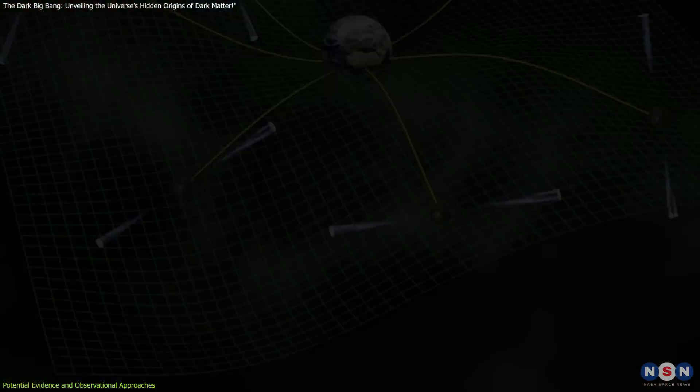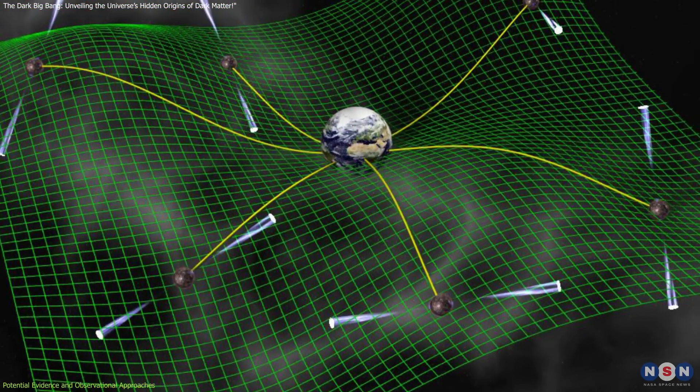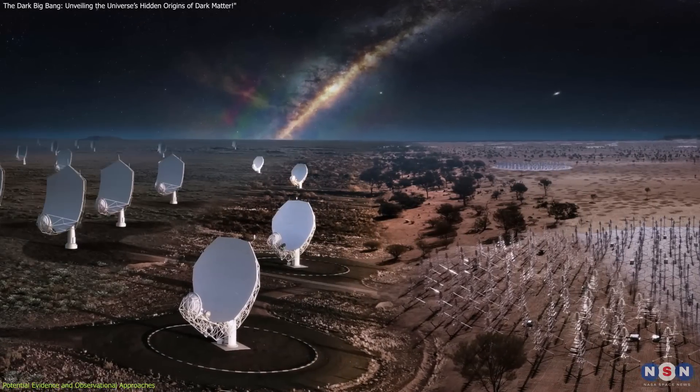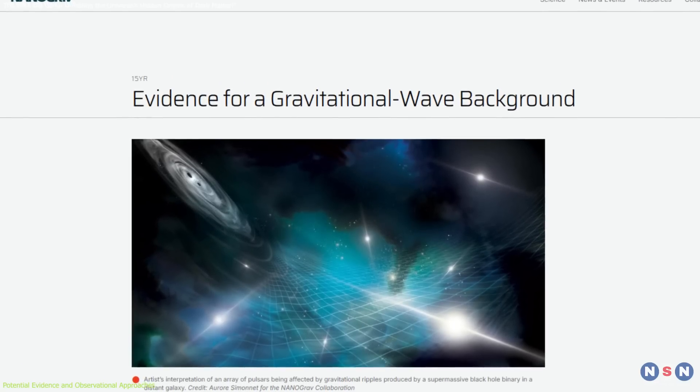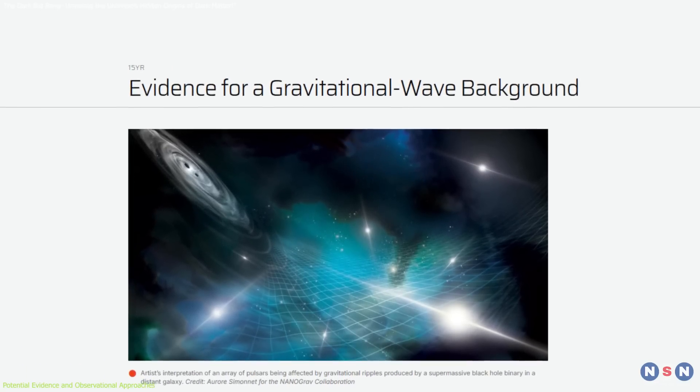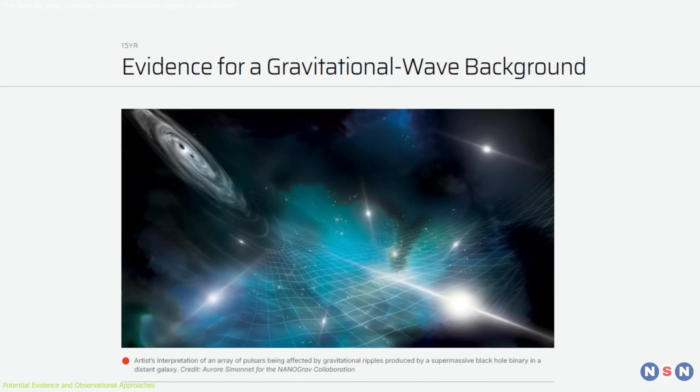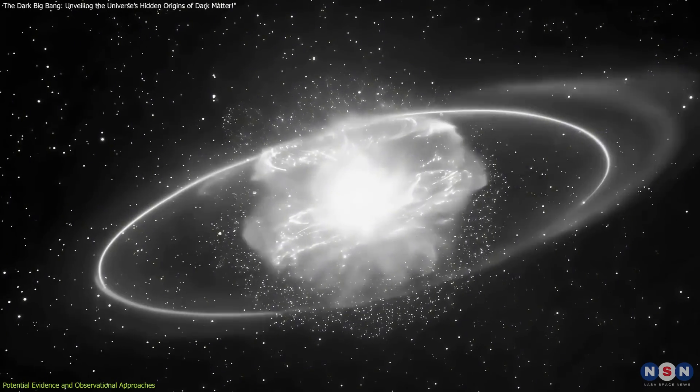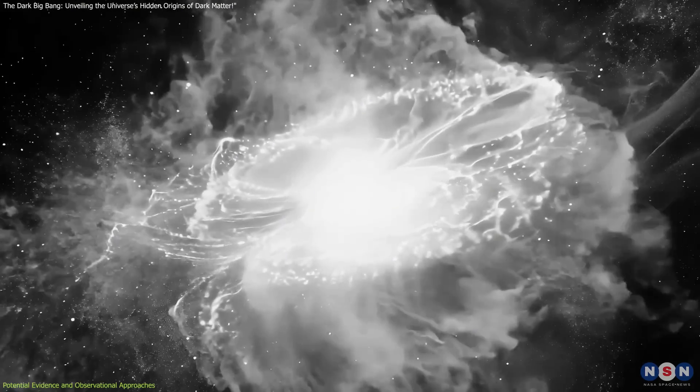To detect them, researchers are leveraging tools like the International Pulsar Timing Array, IPTA, and the Square Kilometer Array, SKA. In 2023, the NANOGRAV Research Collaboration, part of IPTA, reported evidence of a gravitational wave background. These findings could hint at early cosmic events like the Dark Big Bang, setting the stage for further exploration.